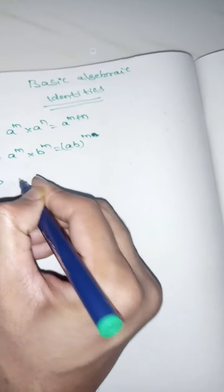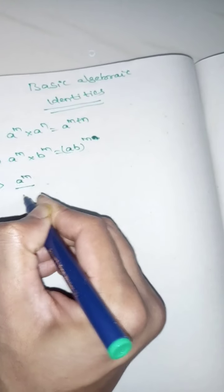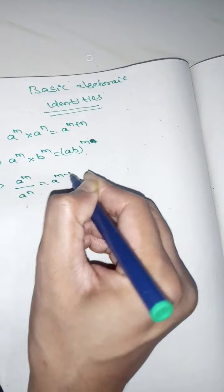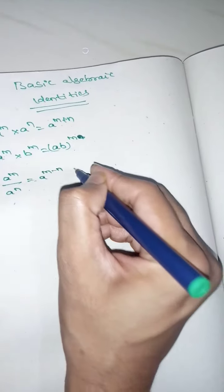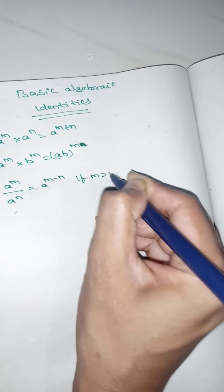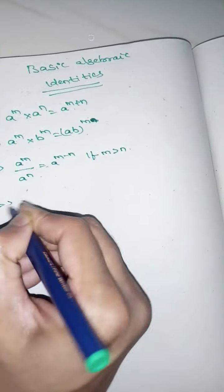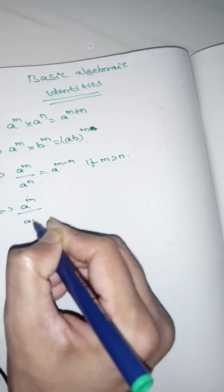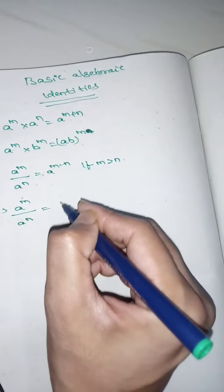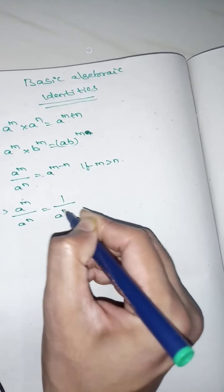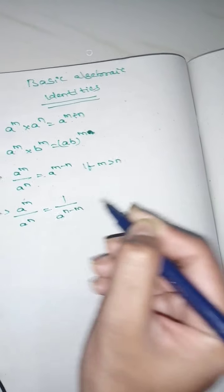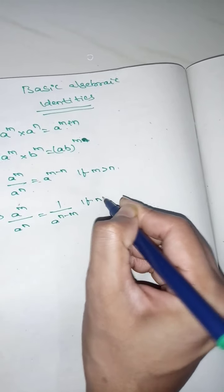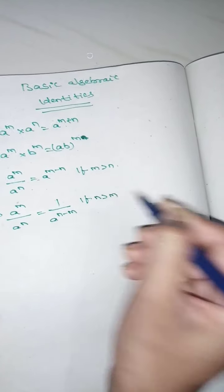Next, a power m by a power n is equals to a power m minus n, if m is greater than n. And a power m by a power n is equals to 1 by a power n minus m, if n is greater than m.